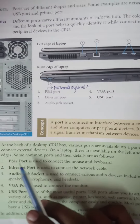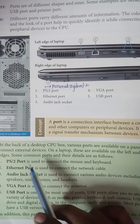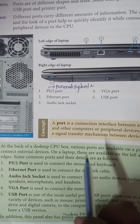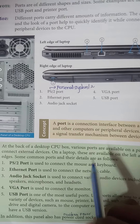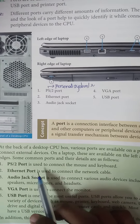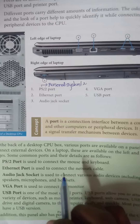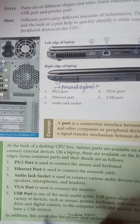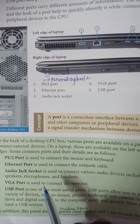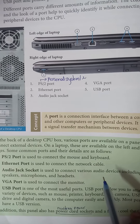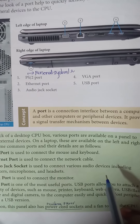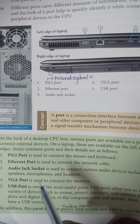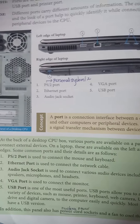The PS/2 port is used to connect your mouse and keyboard — Personal System port. The Ethernet port is used to connect your network cable. The audio jack socket is used to connect various audio devices including speakers, microphones, and headsets.